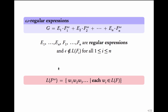The definition of L(f^ω) — the language represented by f^ω — is the set of all words w1, w2, w3, ... such that each wi is in L(f). Essentially, you take some word in f, concatenate it with some word in f, concatenate with some word in f, and so on. This is the generic form of an omega regular expression.